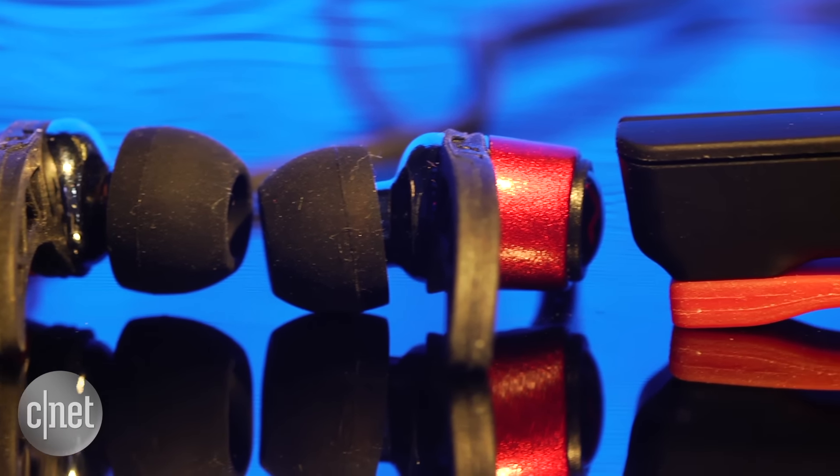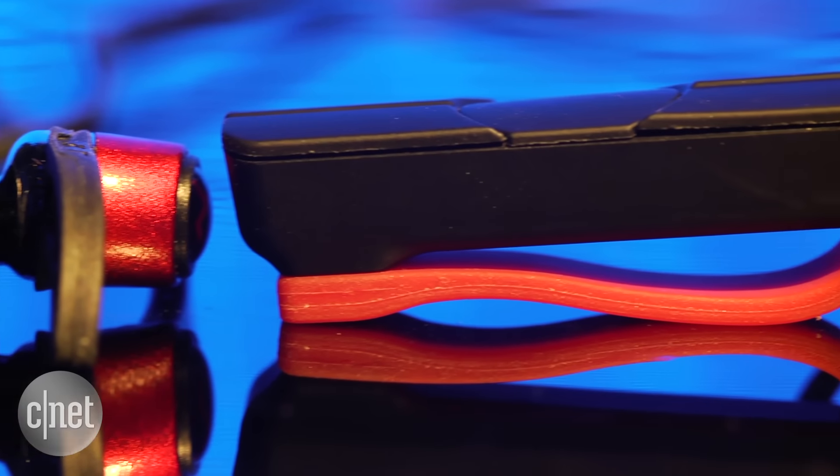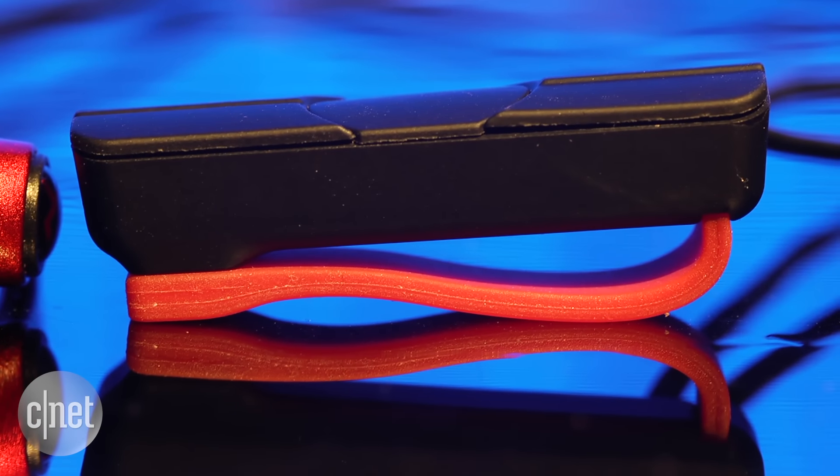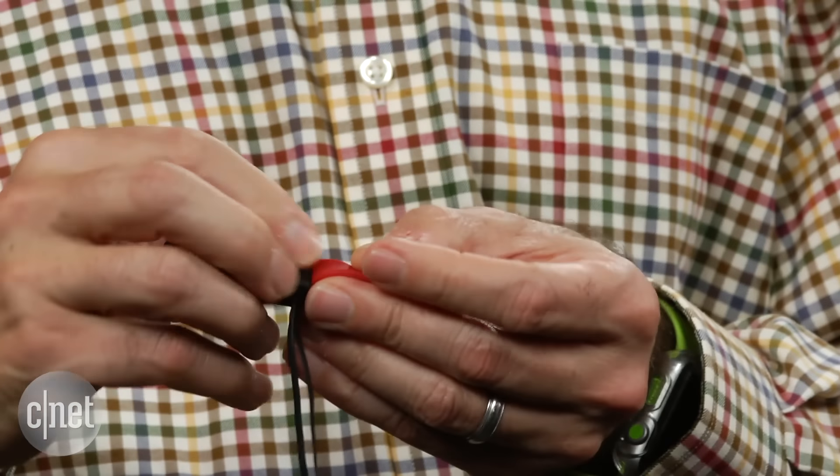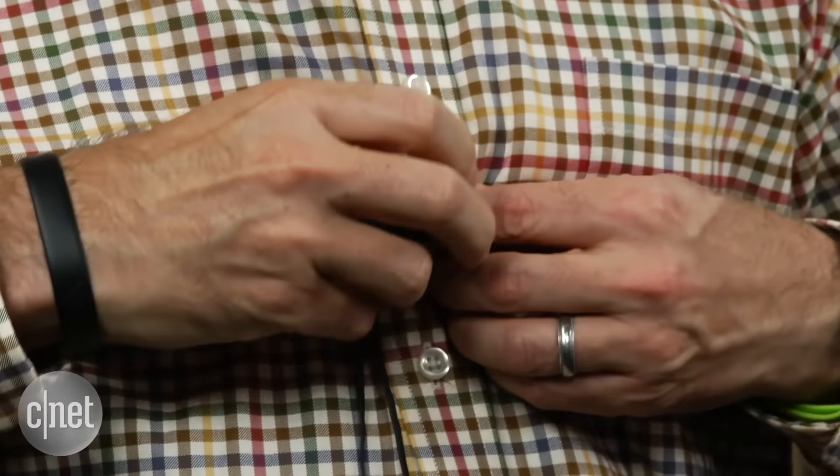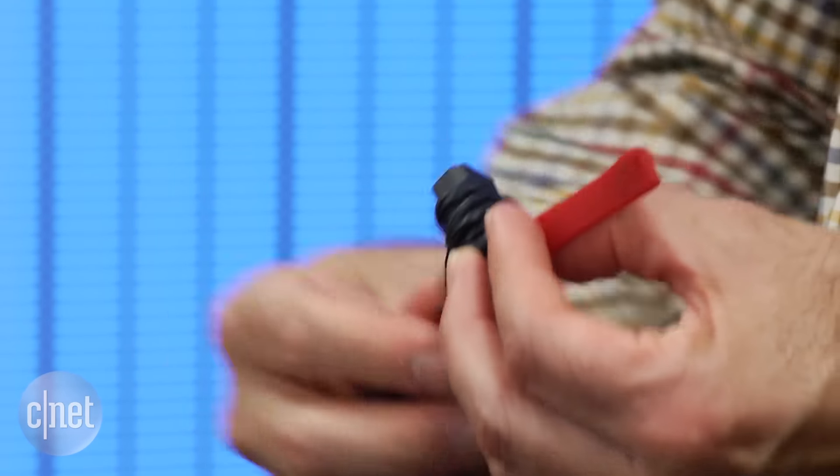I'm also a fan of the headphone's signature design feature on the inline remote which houses the battery, microphone and all the electronics. There's a magnetic clasp that allows you to clip the headphone to your shirt. You can also wrap the cord around the remote and keep everything in place with the clasp.